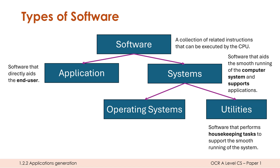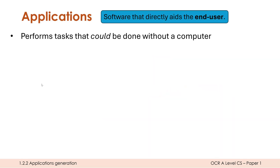Application software is one of our two main types of software. Unlike system software, which is more for looking after the computer, application software is looking after the user — it's there to directly aid the end user. A useful way of thinking about it is that application software performs tasks that could be done without a computer, whereas system software needs the computer to even exist.